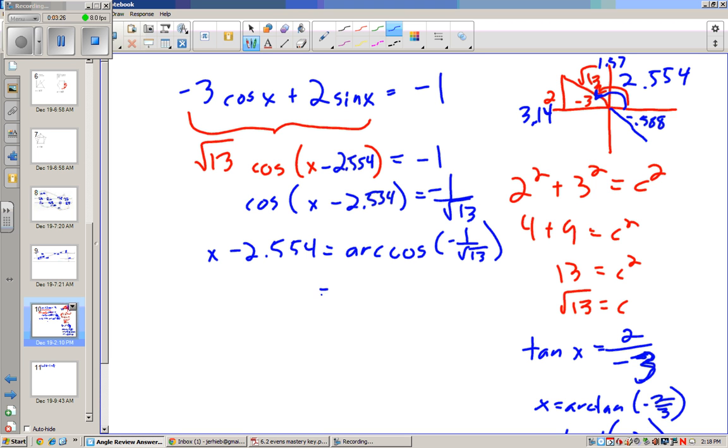which is plus or minus the inverse cosine plus 2 pi n.